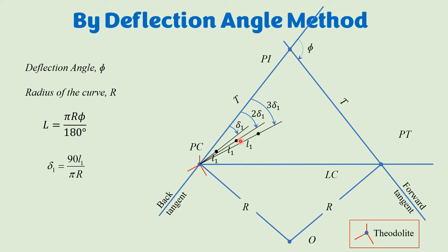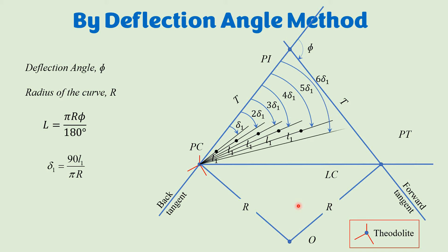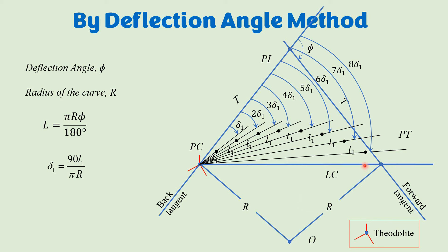Continuing this procedure: four times the deflection angle gives the fourth point at distance l1 from the third. Then five, six, seven, and eight times the deflection angle give the fifth through eighth points respectively, each at peg interval l1 from the previous point, forming the visible curve.